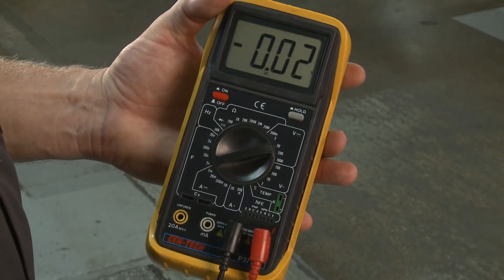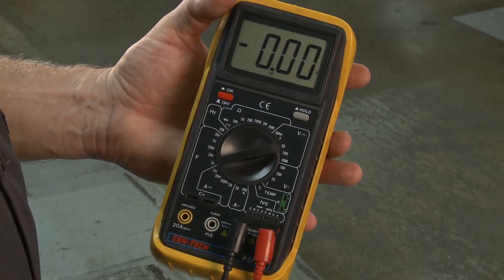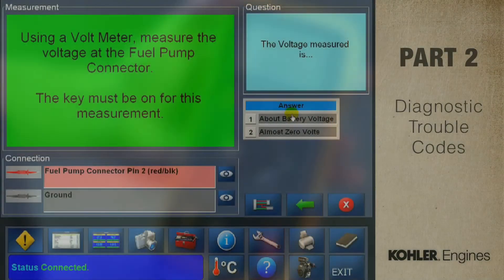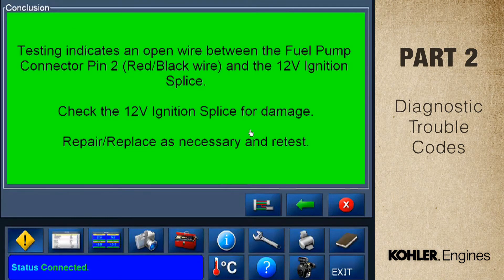In this example, my meter shows no voltage, so I select almost zero volts. Clicking this button brings up a screen that shows the test conclusion and proper repair. Click the red X to exit — you'll use the red X whenever you want to exit any screen.